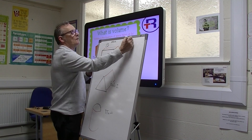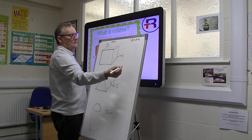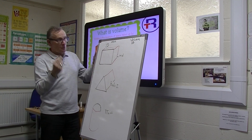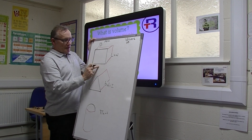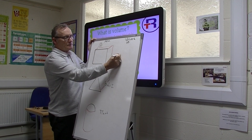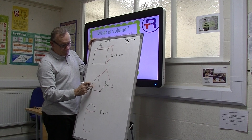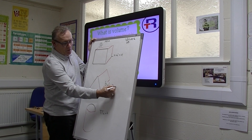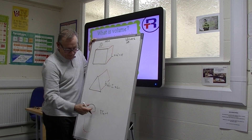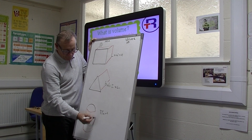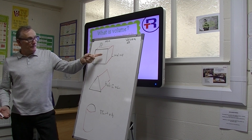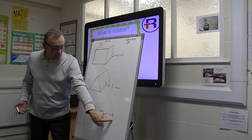All you need to do for volume is one extra sum, because it's gone from being two-dimensional to three-dimensional, so we just need one extra measurement. For the box, we've got length times width — we just multiply it by the height. For the prism, we've got base times height divided by 2 — we just multiply it by the length. For the cylinder, we've got pi times r squared — we just multiply that by the height. And all of a sudden we've gone from area to volume by just doing one extra thing.